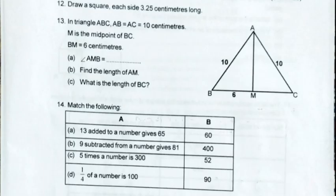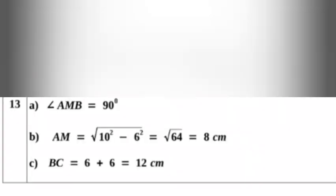Question 13. In triangle ABC, AB equals AC equals 10 cm. M is the midpoint of BC. BM equals 6 cm. A. Angle AMB equals 90 degrees. B. Find the length of AM: AM equals the square root of 10 squared minus 6 squared equals the square root of 64 equals 8 cm. C. What is the length of BC? BC equals 6 plus 6 equals 12 cm.